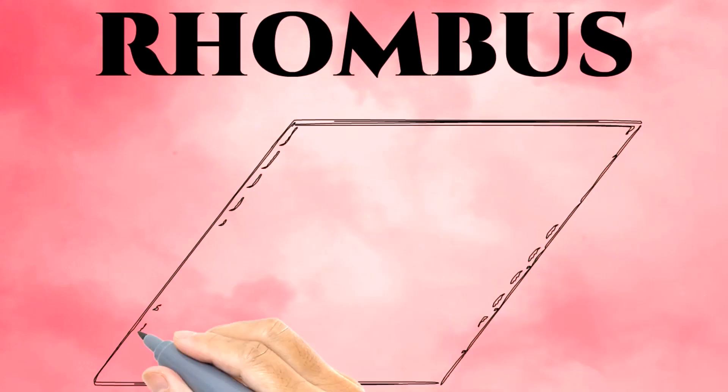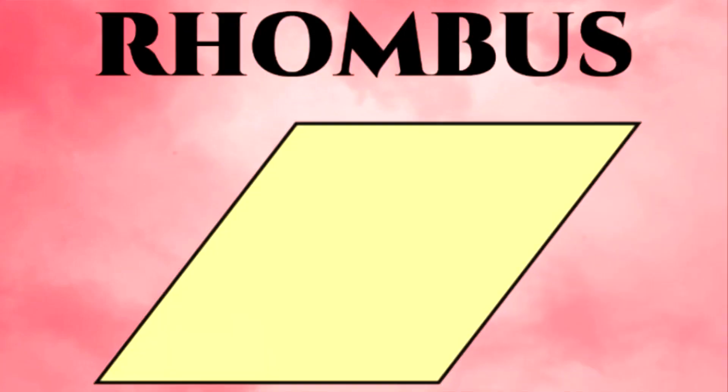This is the shape of a rhombus. There are four equal sides and opposing sides are parallel.